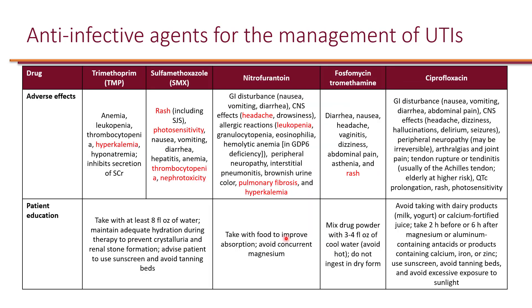Trimethoprim can lead to anemia, leukopenia, thrombocytopenia, hyperkalemia, and hyponatremia. Hyperkalemia is commonly seen in clinical practice and should be monitored. Trimethoprim can also inhibit secretion of serum creatinine in the kidneys, artificially raising serum creatinine levels without necessarily indicating nephrotoxicity. Sulfamethoxazole, however, can cause true nephrotoxicity, so the combination TMP-SMX is considered nephrotoxic overall.